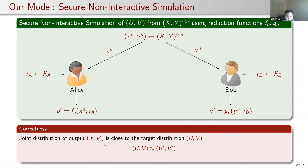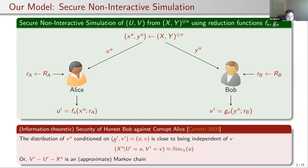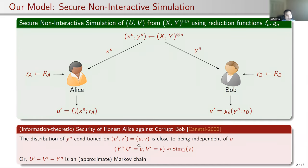The correctness of the simulation ensures that the joint distribution of the outputs is close to the target distribution. In addition to correctness, we also require security conditions. We formulate these security conditions based on universal composable security. In this model, it is secure against a corrupt Alice if the distribution of Alice's samples conditioned on fixing the output is approximately independent of Bob's output. Similarly, it is secure against a corrupt Bob if the distribution of Bob's samples conditioned on fixing the outputs is approximately independent of Alice's output.